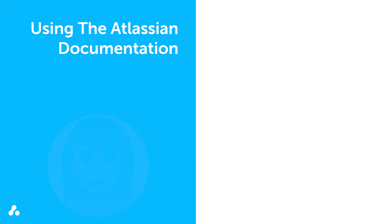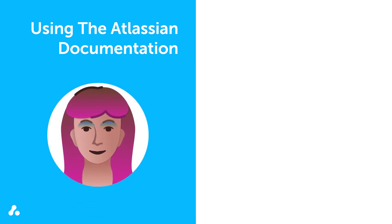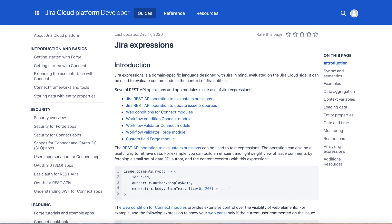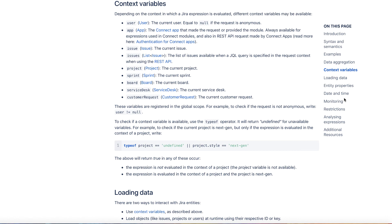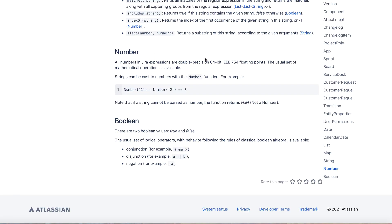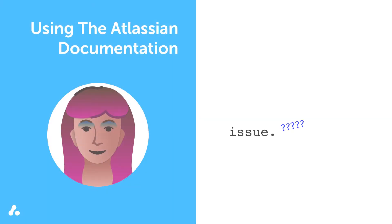For example, Violet needs to create an expression that checks for a specific user ID before an issue can be transitioned. She isn't sure how to write this expression, so she refers to the Atlassian documentation to find the necessary elements of her expression. She chooses the issue context variable. On the property type page, she uses ID and then sees that it is a number expression. So she adds an equal sign to her code and then the numerical ID number for the specific user. With these references, you can build simple and complex expressions in Jira.